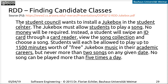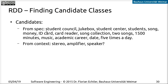Nouns inside the system specification are a primary source for candidate classes. If we discuss the system with other people, nouns will also be mentioned for entities and objects, and we usually have background knowledge about the problem domain. All nouns that appear in these thoughts and texts are candidate classes. For example: the student council wants to install a jukebox in the student center. Students are allowed to play a song for free if they swipe their ID card. They have up to 1,500 minutes of music while at the university, but can only play two songs on one date and cannot play Rick Astley 20 times a day.